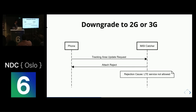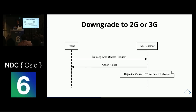The third attack is to downgrade to 2G or 3G. Again, the exact same message flow — I'm just changing the rejection cause parameter in the attach reject message. This time I'm saying 'LTE service not allowed', so the phone won't search for LTE and will fall back to 2G and 3G. Remember, both 2G and 3G are broken. For instance, if the phone jumps to 2G, there's no mutual authentication in 2G, so you can do a full man-in-the-middle attack with an IMSI catcher — you can basically sniff all messages and phone calls that go between the phone and the real network.